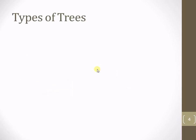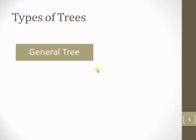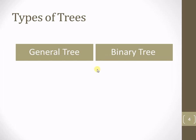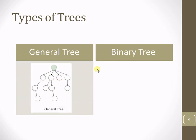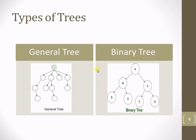Now let's start with the types of trees. Basically there are two types: general tree and binary tree. This is the example of a general tree, and this is the example of a binary tree.